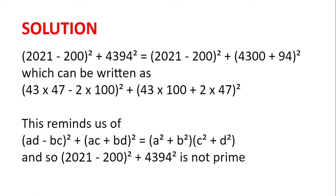Now, remembering Diophantus' identity, this reminds us of (ad minus bc) squared plus (ac plus bd) squared where a is 43, b is 2, c is 100, and d is 47. We know that equals (a squared plus b squared)(c squared plus d squared). Hence, 2021 minus 200 squared plus 4394 squared is not prime, because it has factors 43 squared plus 2 squared and 100 squared plus 47 squared.